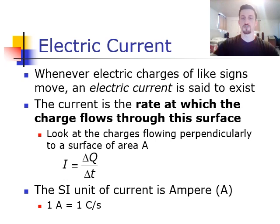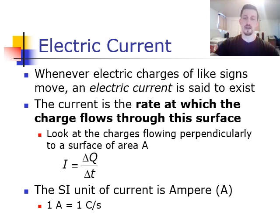So whenever we have electric charges moving, we say that we have an electric current. The current is just the rate at which the charge flows through the surface. Mathematically, if we look at the charges flowing perpendicularly to a surface of area A, I is equal to delta Q over delta T. In this formula, I stands for current, delta Q is the amount of charge flowing, and delta T is change in time. So the amount of charge that moves in a certain amount of time is our current I. The SI unit for current is the ampere or amps — one amp is equal to one coulomb divided by one second. Make sure that if you're using this formula, you have everything in base units.